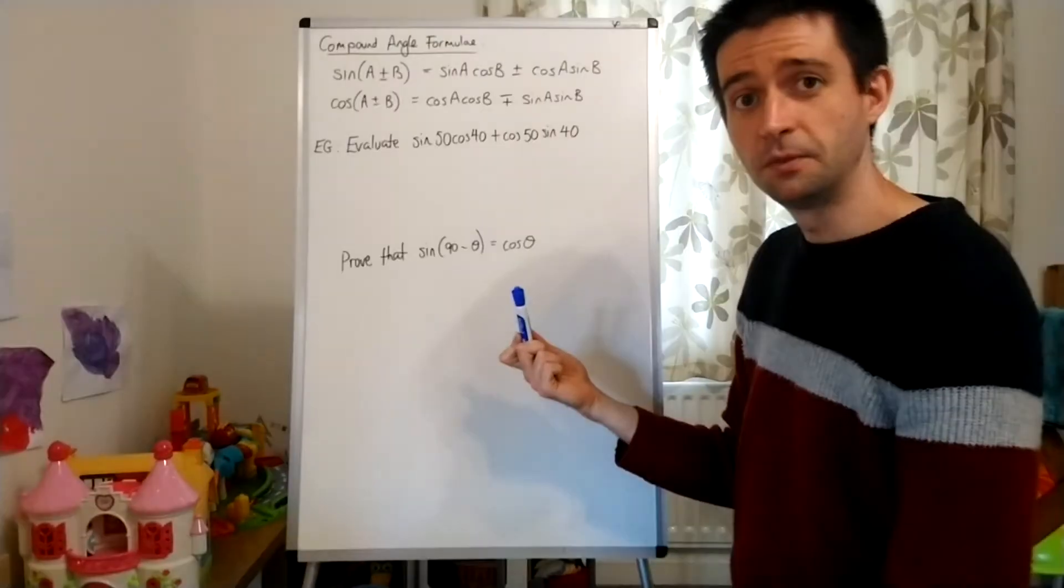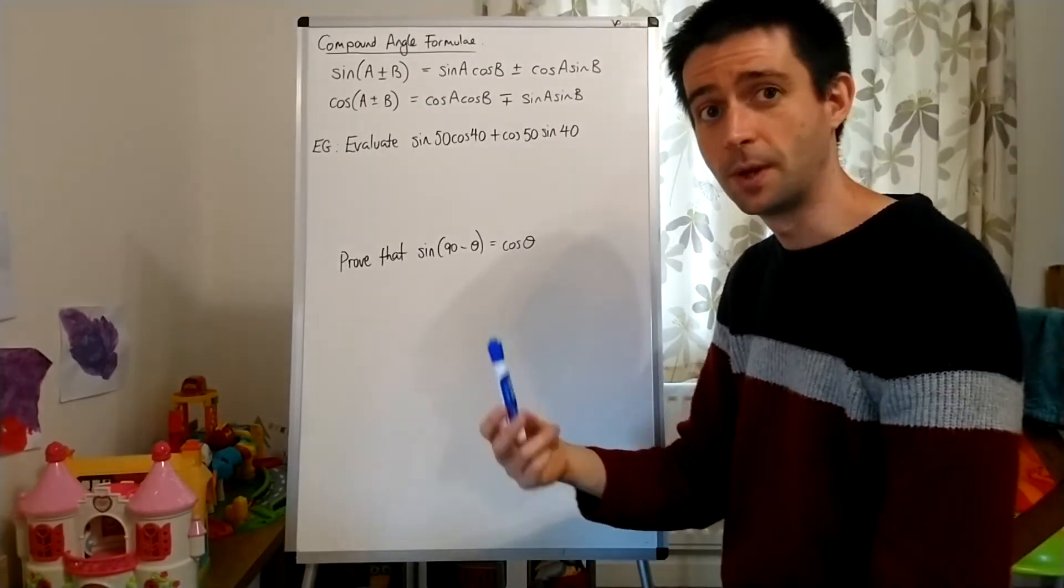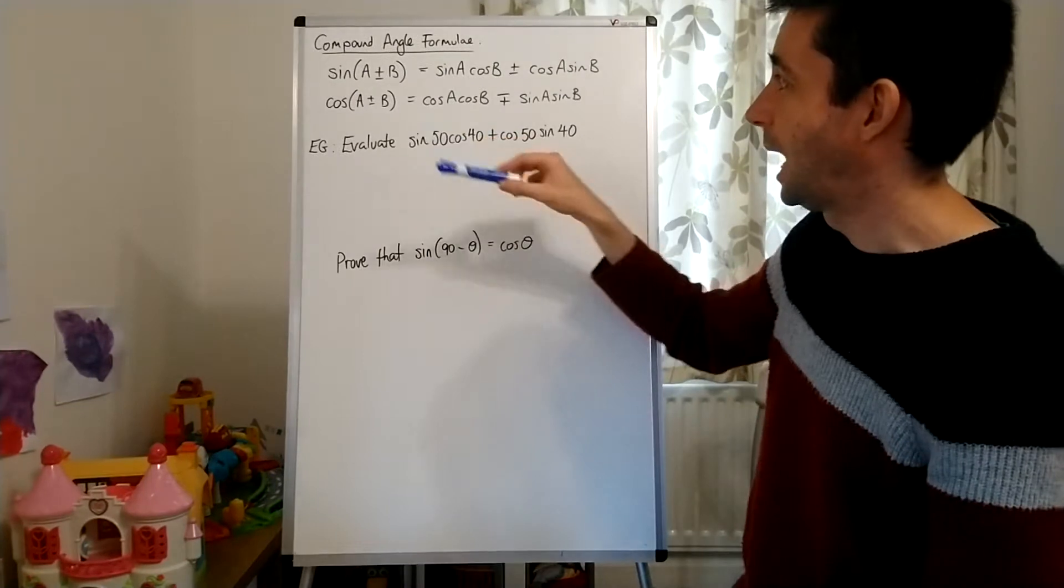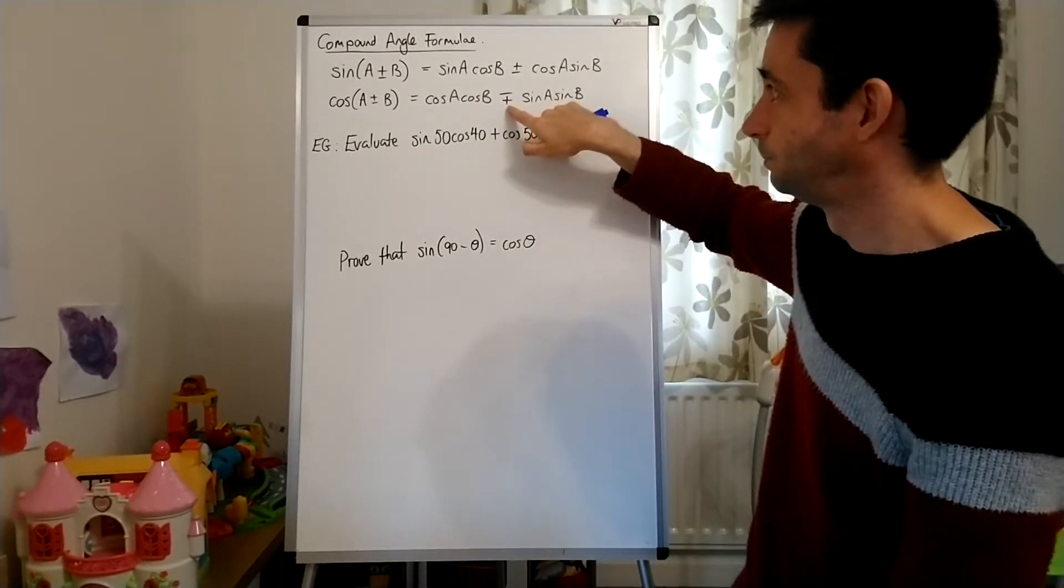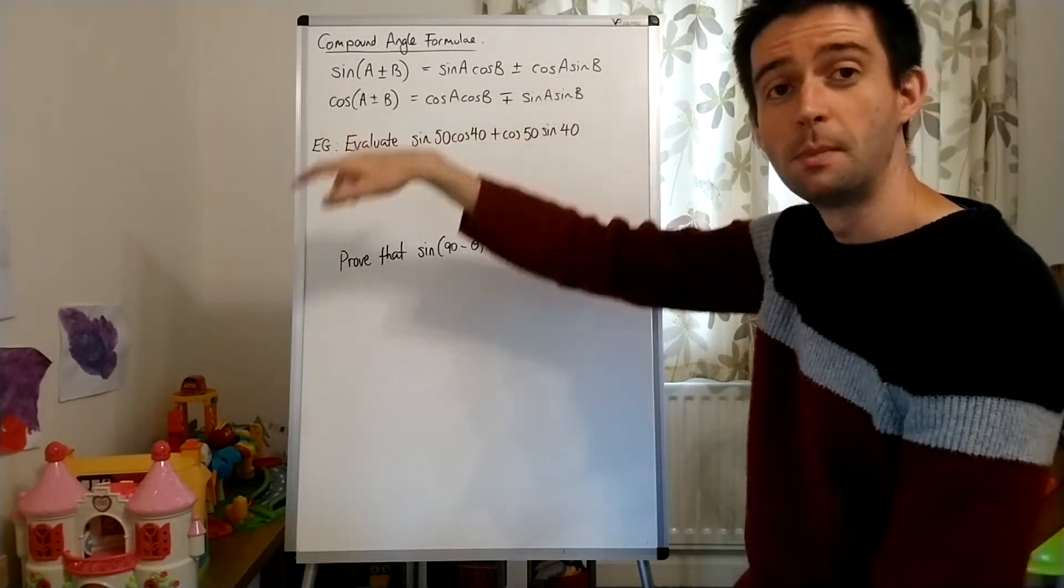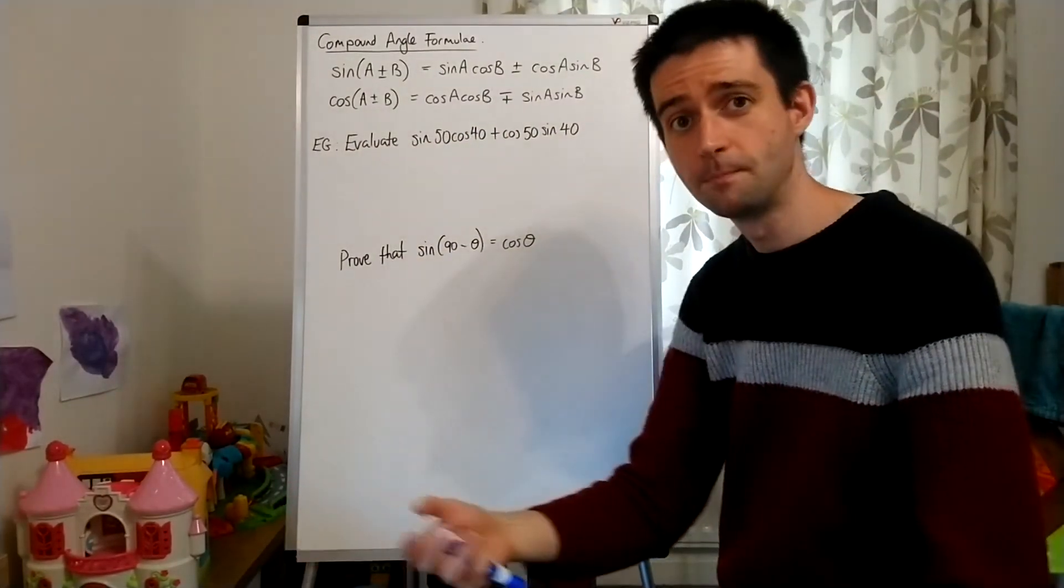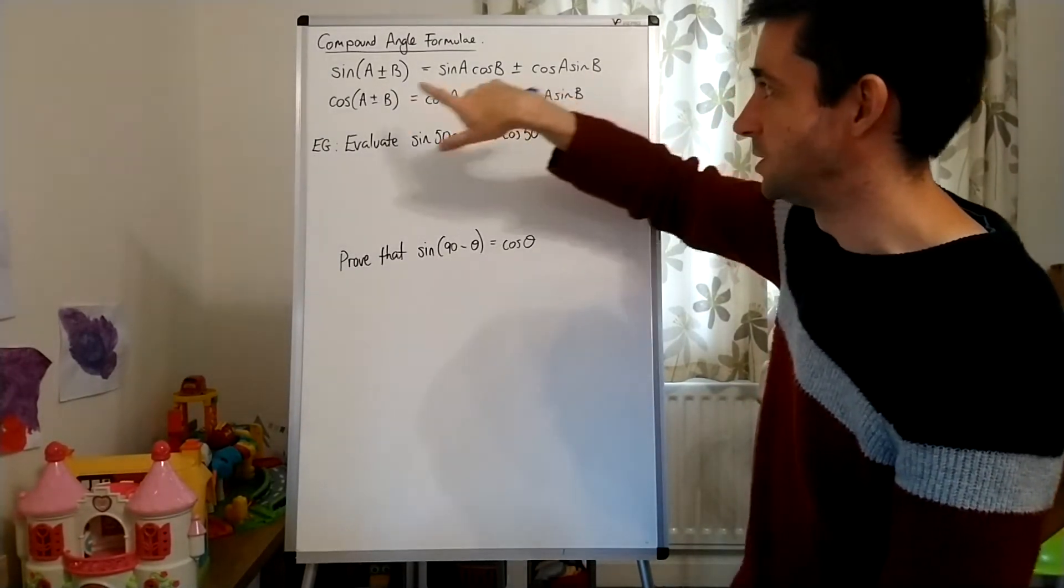There is a similar identity for cos of the sum of two angles, or the difference of two angles. Now however, this may be the first time that you've seen this symbol here, where you have minus or plus. You'll be familiar with plus or minus from things like the quadratic formula, but minus or plus, you might not have seen before. Just talking briefly about what that means.